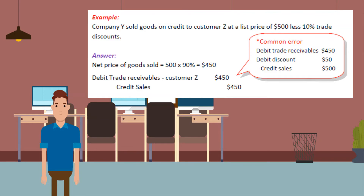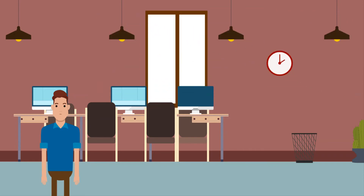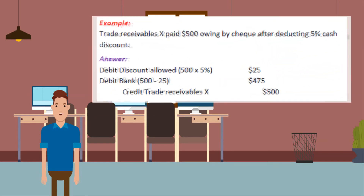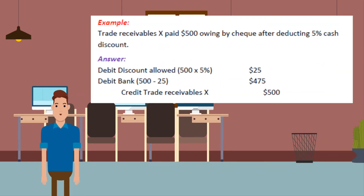Cash discounts are discounts given to encourage customers to pay promptly and are recorded in the accounts. Example: Trade receivables X paid $500 owing by cheque after deducting 5% cash discount. The answer: debit discount allowed $25 (5% of $500), debit bank $475 ($500 minus $25), credit trade receivables X $500.